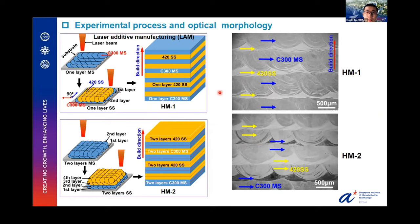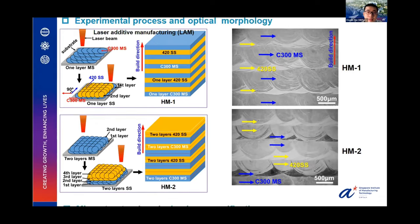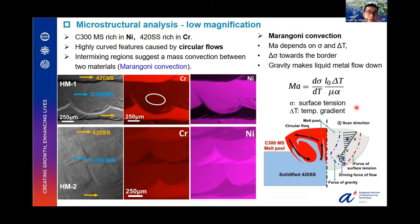The optical morphology demonstrates the layer-wise features of the sample following the design pattern. The darker region is MS and the brighter region is SS, because MS has poorer corrosion resistance than SS. From EDS mapping, we find that MS is rich in nickel while SS is rich in chromium, with a high-nickel circular flow pattern — typical of Marangoni convection during laser processing, caused by surface tension and the temperature gradient.